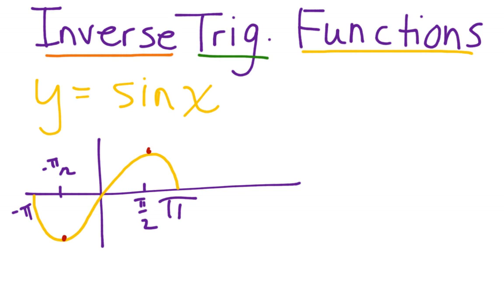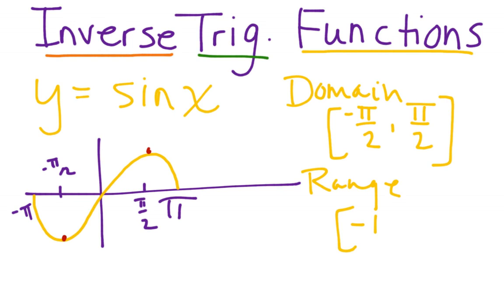So when I restrict the domain and only look at, and it is inclusive, including negative pi over two and pi over two, then what happens is the range is still from negative one to one. But we're only looking at this much of the function from negative pi over two to pi over two.